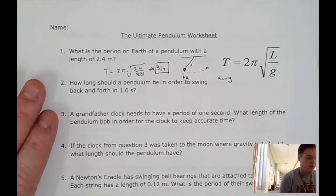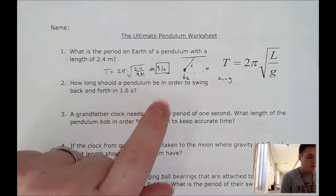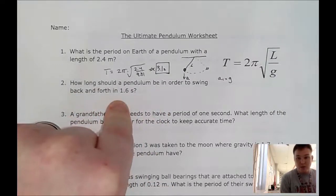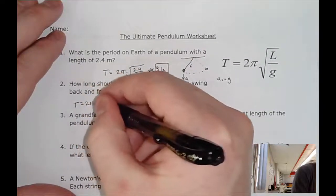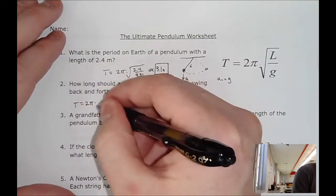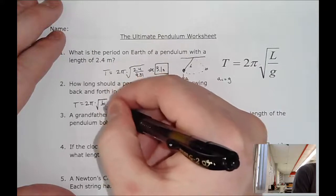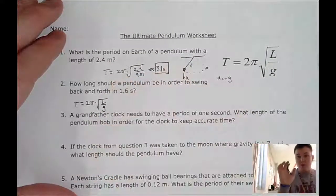How long should a pendulum be in order to swing back and forth in a period of 1.6 seconds? Now this is a little bit more tricky because we have to rearrange this formula to solve for the length.